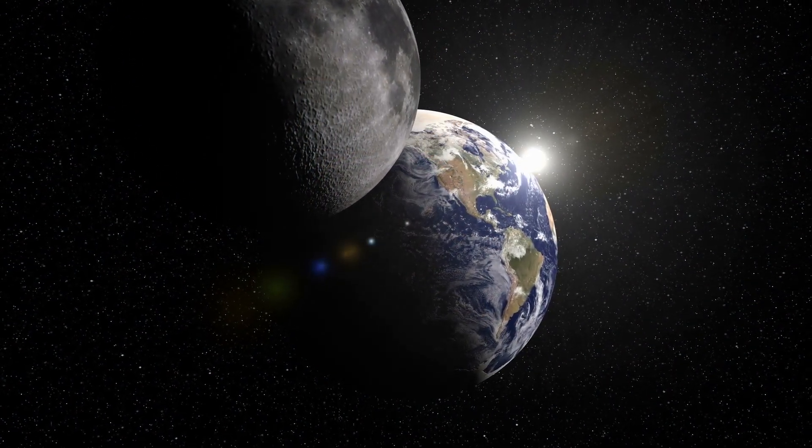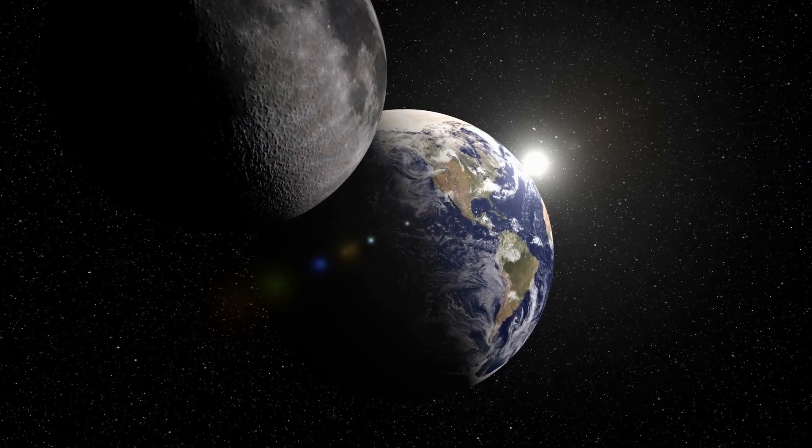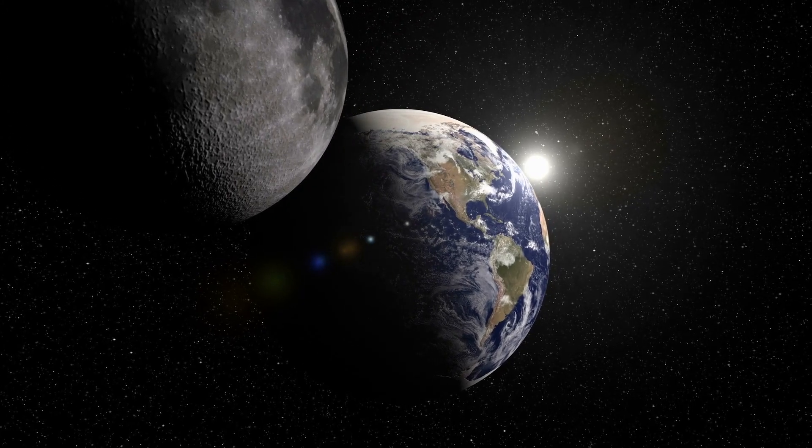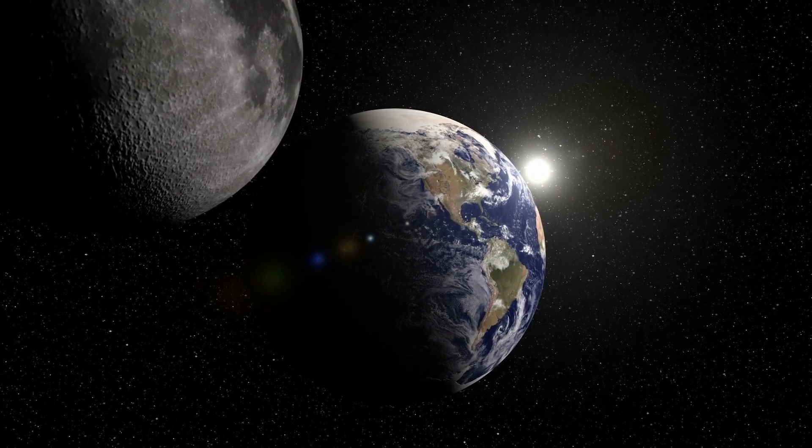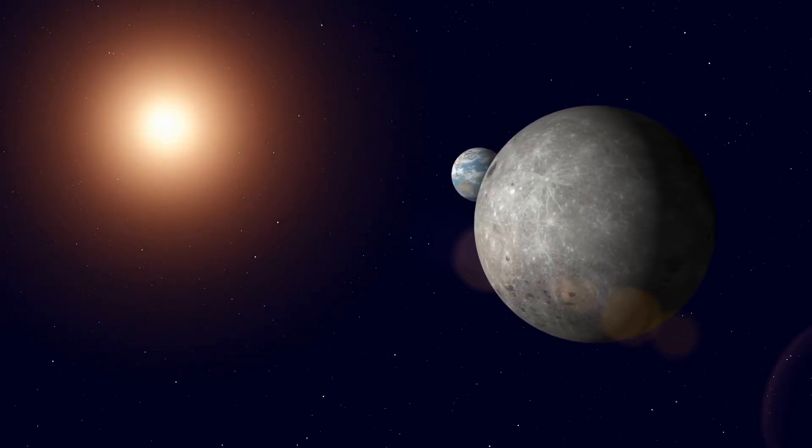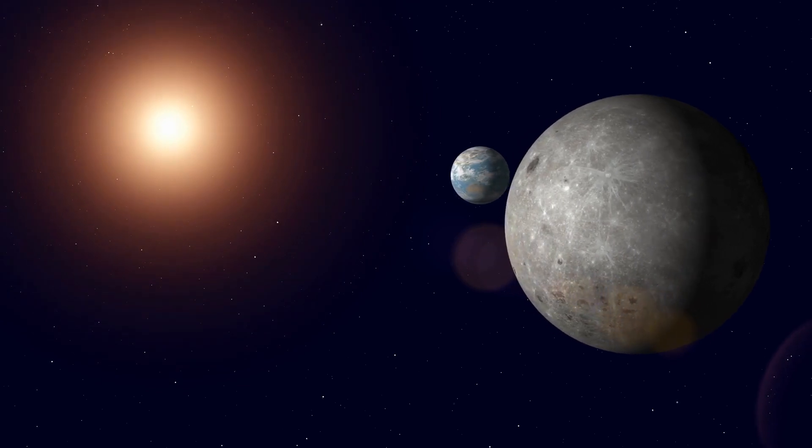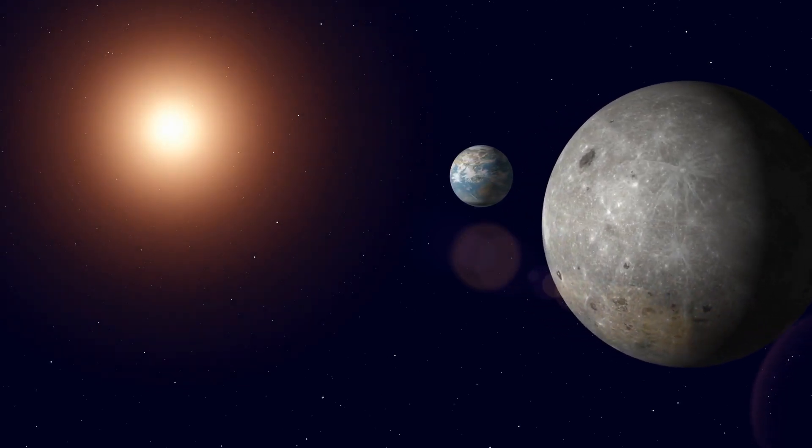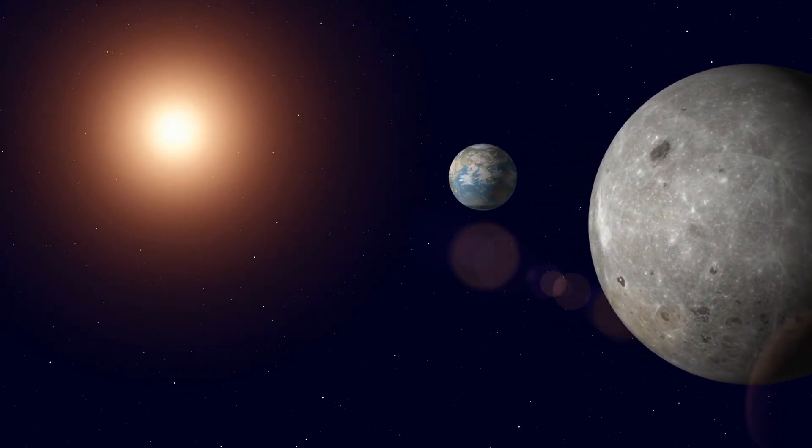But there are other large balls that move around planets. These are called moons. A moon, unlike the Sun, is not a source of light. Instead, it shines because it reflects the sunlight that hits its surface.